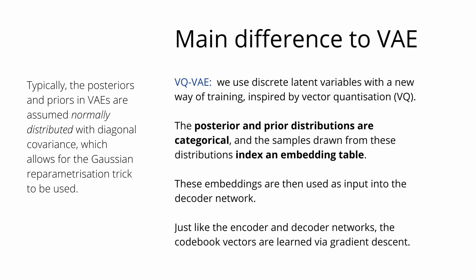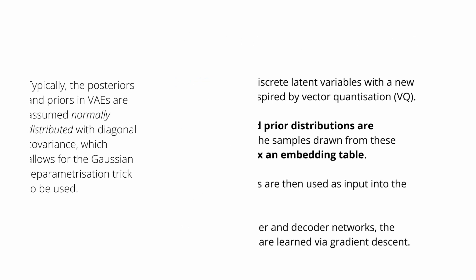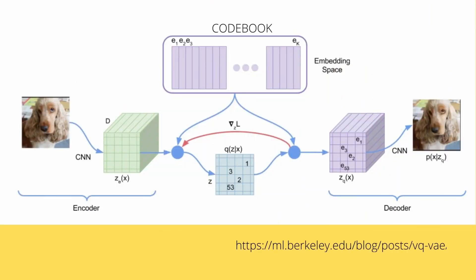The samples drawn from this categorical distribution index an embedding table — it's a one-hot encoding, if you think about Word2Vec. Those embeddings are then used as input to the decoder network, and we run back from the latent space through the decoder trying to generate the original image. Just like our encoder and decoder network, the codebook vectors — which are the discrete latent variables — are learned via gradient descent.